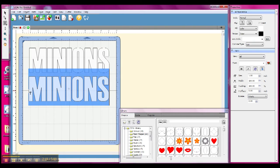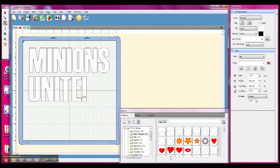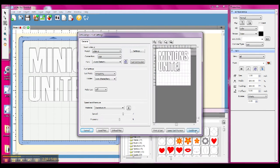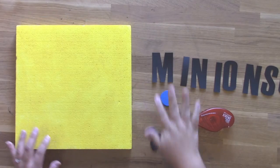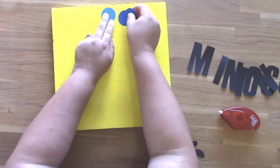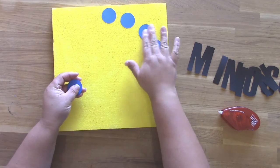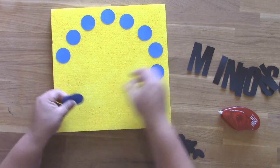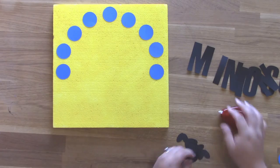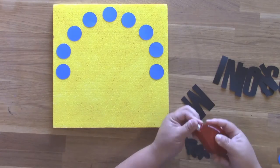So using the text tool I typed those out using a font called Bebas. Anyway, so I cut those out. I used some Darice cardstock. Darice sent me the cardstock for this and Smooth Foam also gave me the Smooth Foam sheets for this project.